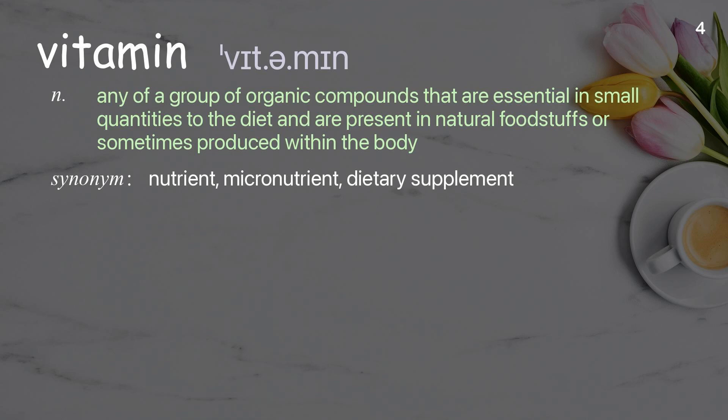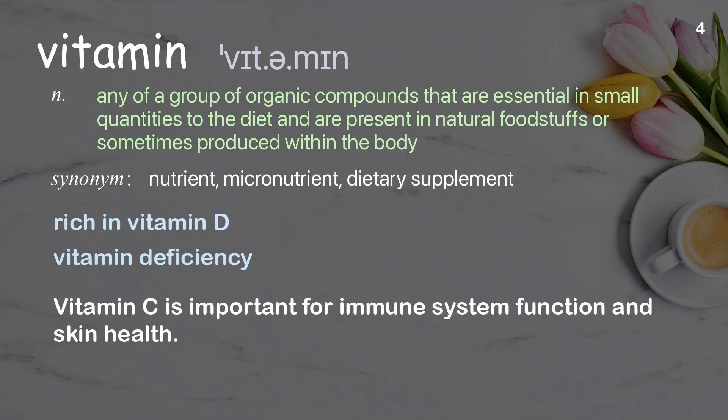Vitamin. Any of a group of organic compounds that are essential in small quantities to the diet and are present in natural foodstuffs or sometimes produced within the body. Examples: rich in vitamin D, vitamin deficiency. Vitamin C is important for immune system function and skin health.